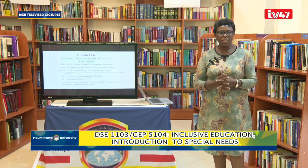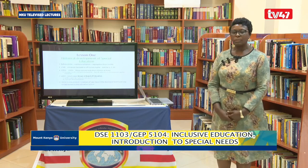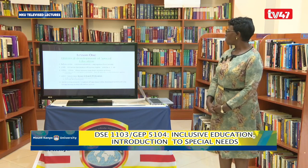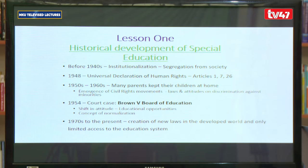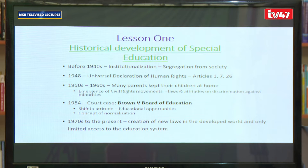Previously, before the 1940s, in the developed countries, children who were born with disabilities would be put in institutions. That became a period of institutionalization where children were seen not to fit within normal society and, instead, they would be kept separately. They would not live with their parents but would be put in institutions where they would only be fed. The idea was just for survival — there was nothing like learning or any interventions. It was all about keeping them away from society.